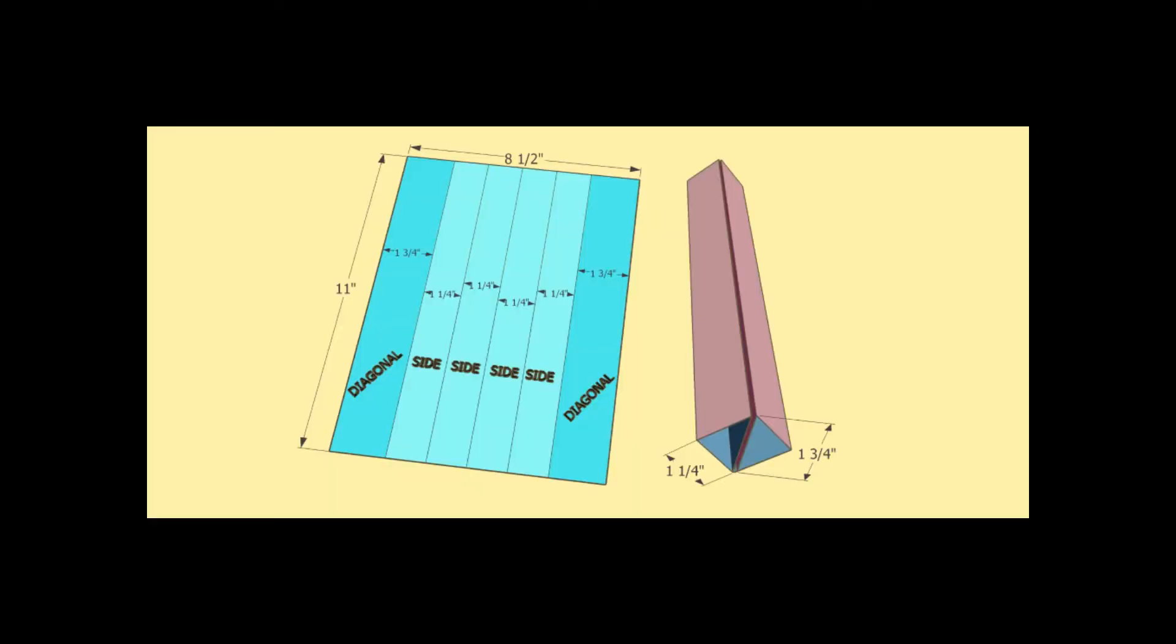The length of the rectangle will be the same as the length of the folded stick. The width of the rectangle is approximately 6.8 times the width of the folded stick.